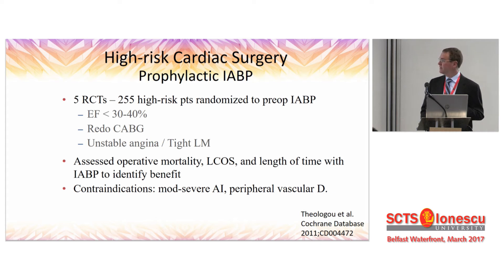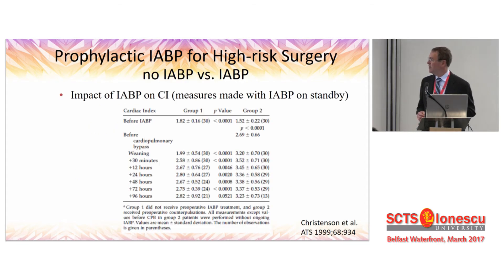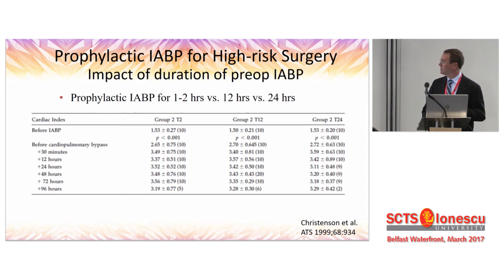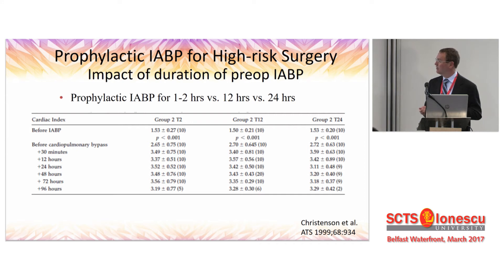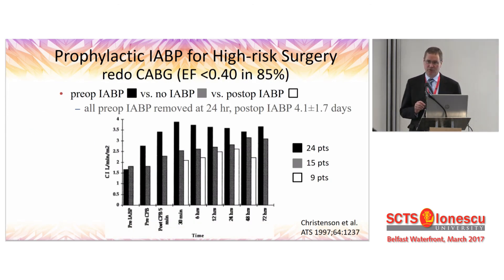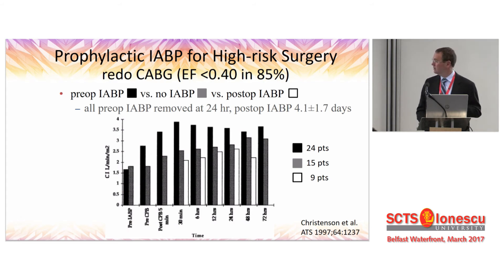Looking at prophylactic intra-aortic balloon pump, there was a nice study of five randomized controlled trials — 255 high-risk patients randomized to balloon pump or no balloon pump preoperatively. Moderate-to-severe aortic regurgitation and peripheral vascular disease excluded patients from the studies. Within an hour, patients on the intra-aortic balloon pump had a dramatic increase in cardiac output. Comparing patients who had it placed one to two hours before surgery versus 12 or 24 hours before, there was really no substantial difference. So just an hour or two of balloon pump preoperatively was thought to be sufficient, and patients with a preoperative intra-aortic balloon pump did substantially better than those who had it placed intraoperatively or postoperatively for low cardiac output syndrome.